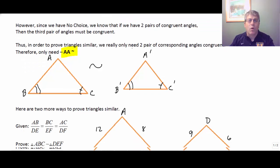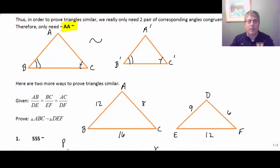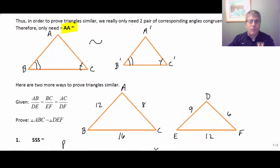And then there are two more ways to prove triangles similar. The first one, kind of like congruent triangles, but now similar, is side, side, side. If we can get the ratio of the corresponding sides to all be the same, then the triangles would be similar by side, side, side.